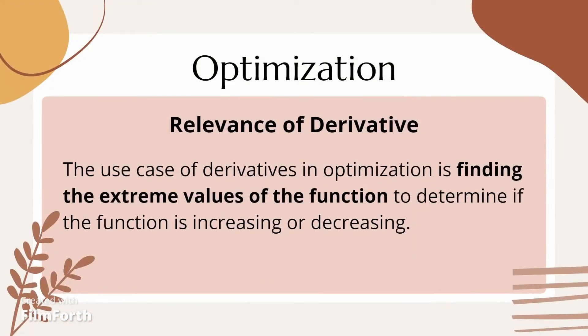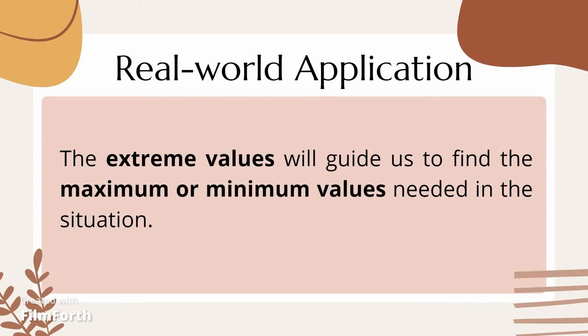In optimization, the relevance of the derivative is finding the extreme values of the function to determine if the function is increasing or decreasing. Before going to the second real-world application of derivatives, we should consider the importance or the meaning of extreme values. The extreme values will guide us to find the maximum or minimum values needed in this situation.